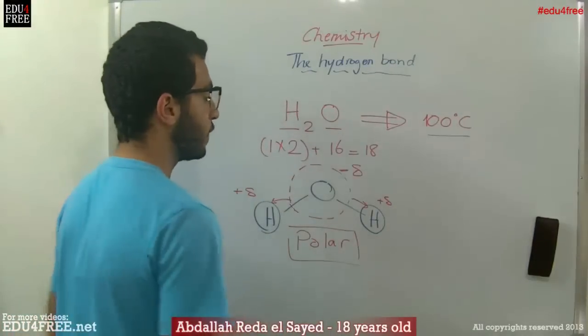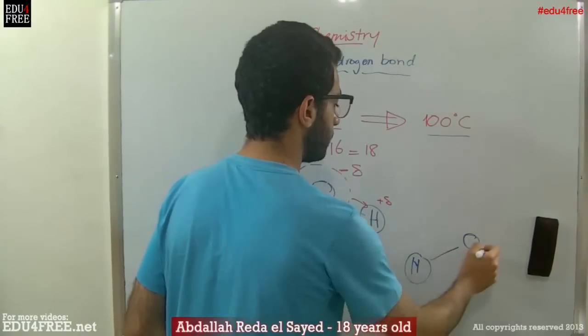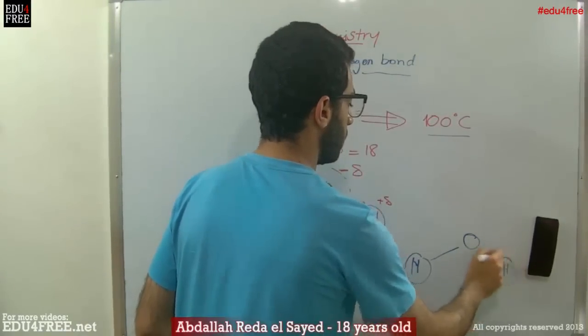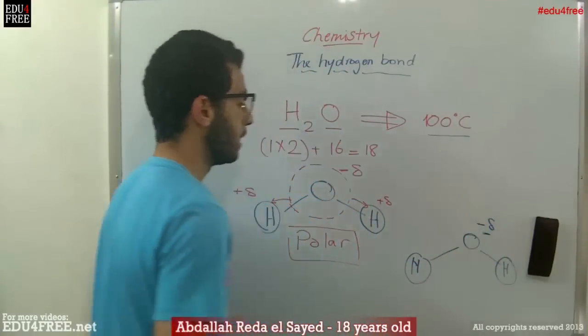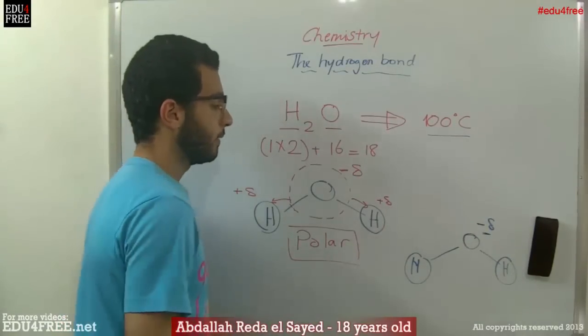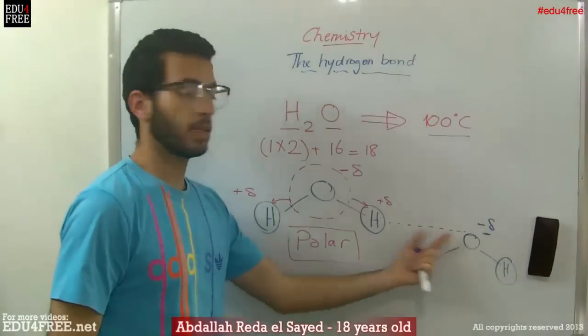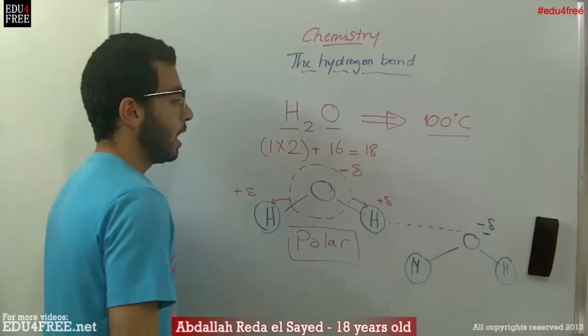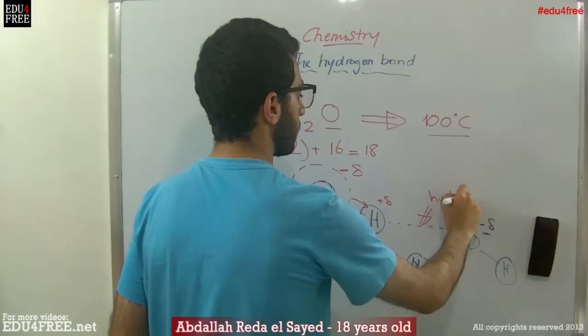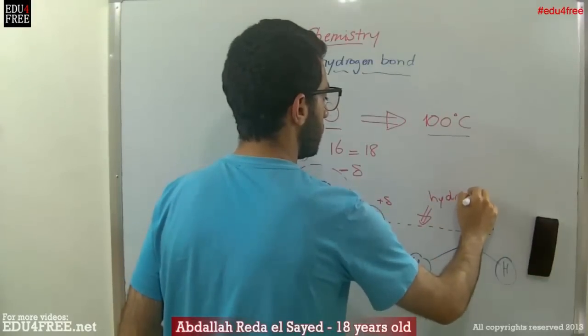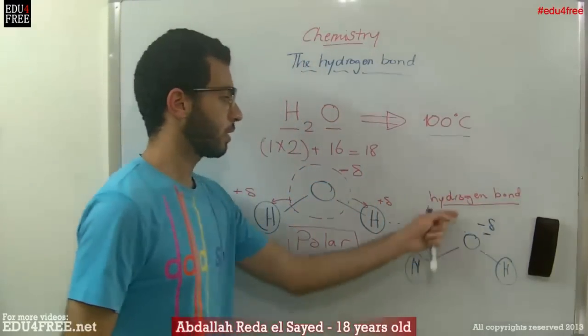Now if we have another molecule of water, this oxygen has a partial negative charge. The hydrogen here makes a bond due to the difference in the electronegativity between the two atoms. And this bond is the hydrogen bond, or it's called also the hydrogen bridge, but most commonly the hydrogen bond.